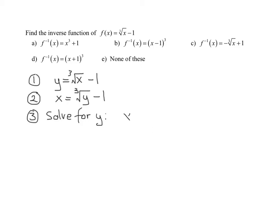So let's rewrite the equation. I have x equals the cube root of y minus one. So what I'm going to have to do is add one to both sides.